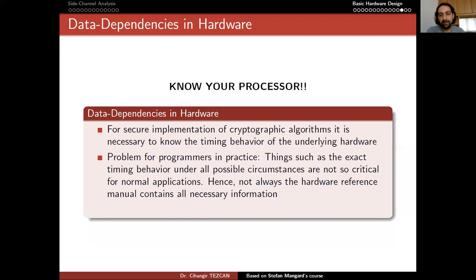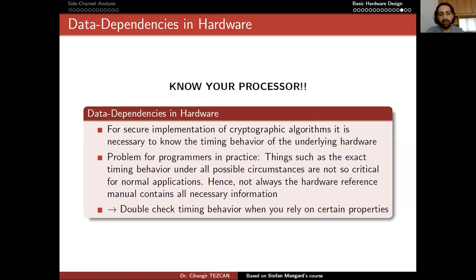The problem for programmers in practice is as follows: things such as the exact timing behavior under all possible circumstances are not so critical for normal applications. Hence, not always does the hardware reference manual contain all necessary information. This is very important for big devices — for GPUs, we have very good manuals that almost explain the timing for almost every operation the device can perform. But for ICs or ARM processors, this may not be the case. For this reason, you need to double-check timing behavior when you rely on certain properties.